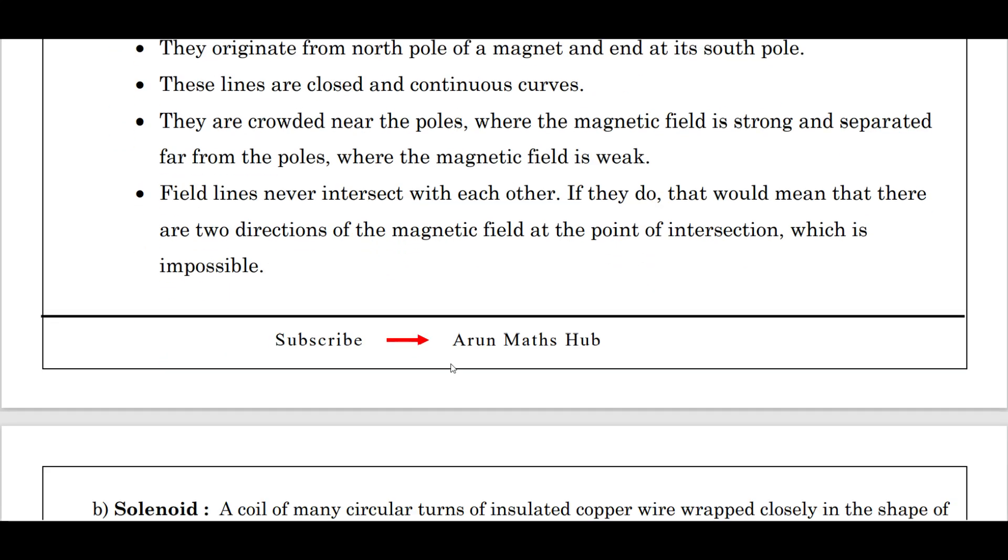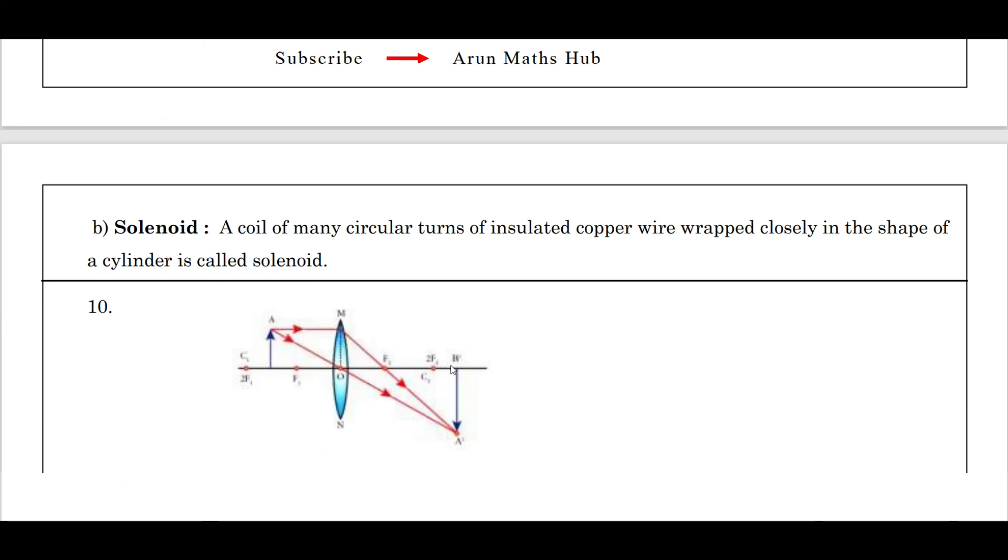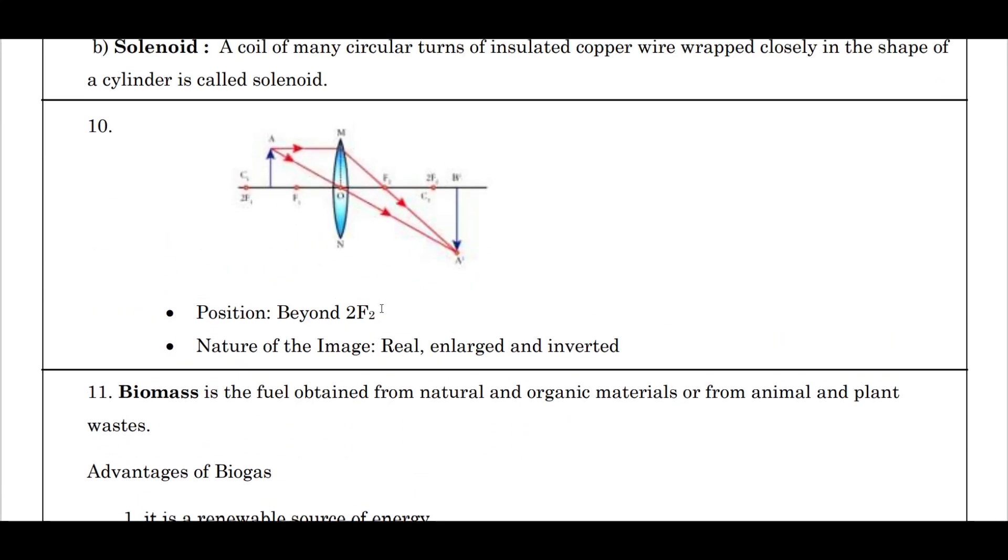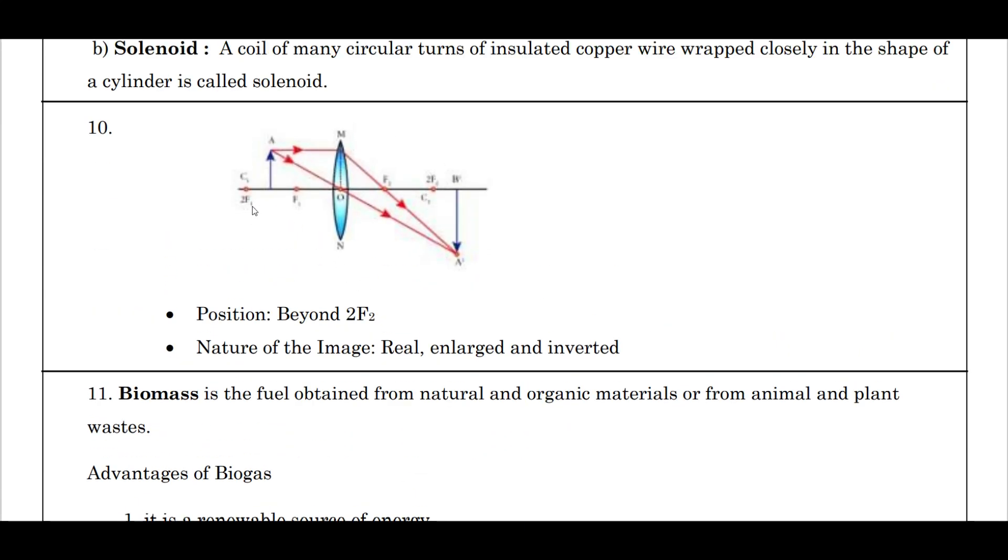Next question B: what is a solenoid? A coil of many circular turns of insulated copper wire wrapped closely in the shape of a cylinder is called a solenoid. Next, ray diagram: when the object is placed between f1 and 2f1, the image is found beyond 2f2. What is the nature of the image? It is real, enlarged, and inverted.